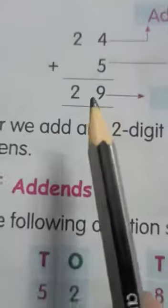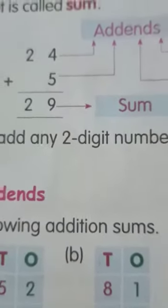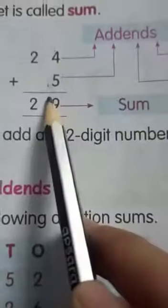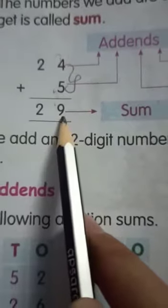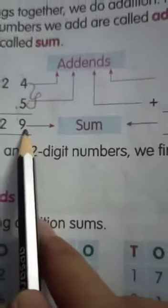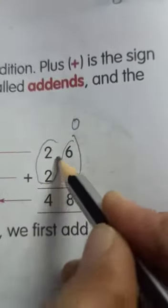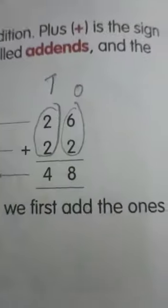Next — addend and sum. When we put things together, we do addition. Plus is the sign of addition. The numbers we add are called addends, and the answer we get is the sum. Whenever we add any two-digit numbers, we first add the numbers on the ones place, and then we add the numbers on the tens place.